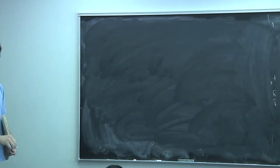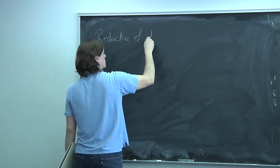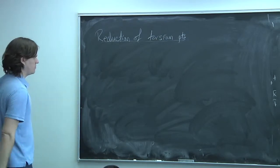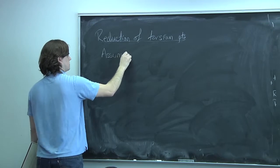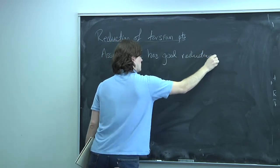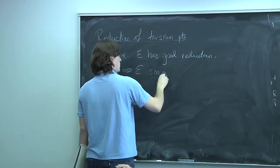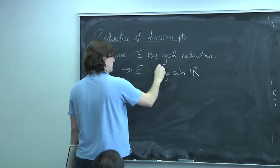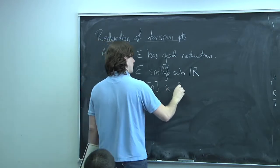Now I want to talk about what reduction does on torsion. I'm going to assume for this part of the lecture that we're only in the good reduction case. This means that our minimal Weierstrass model is a smooth group scheme over R.